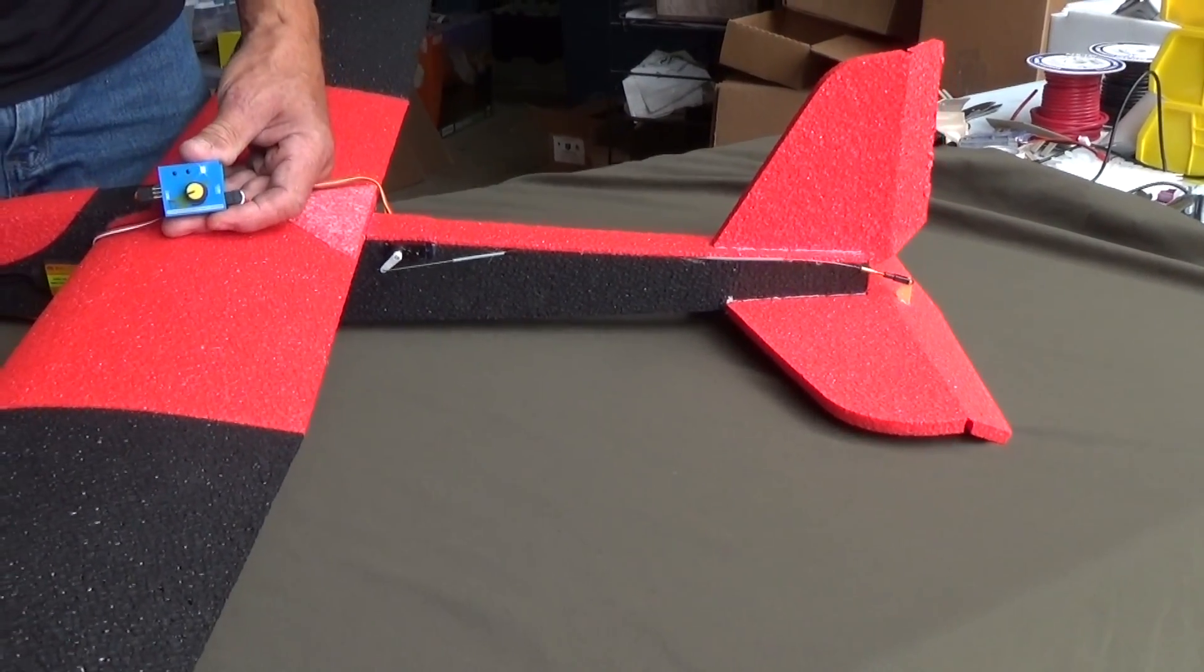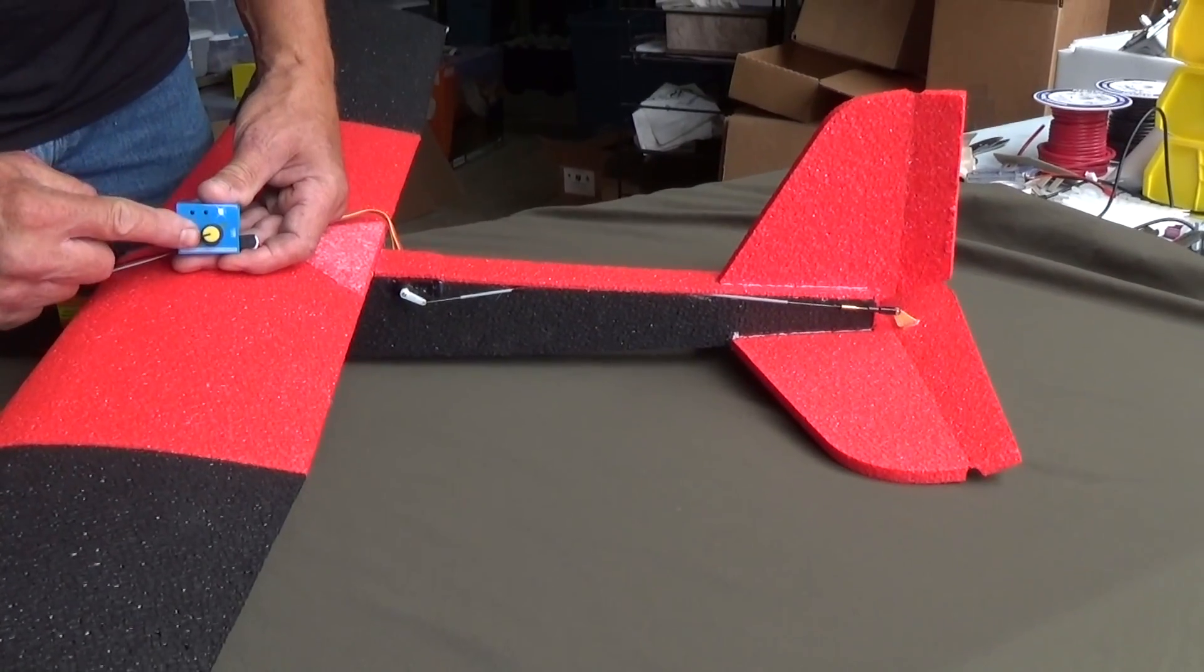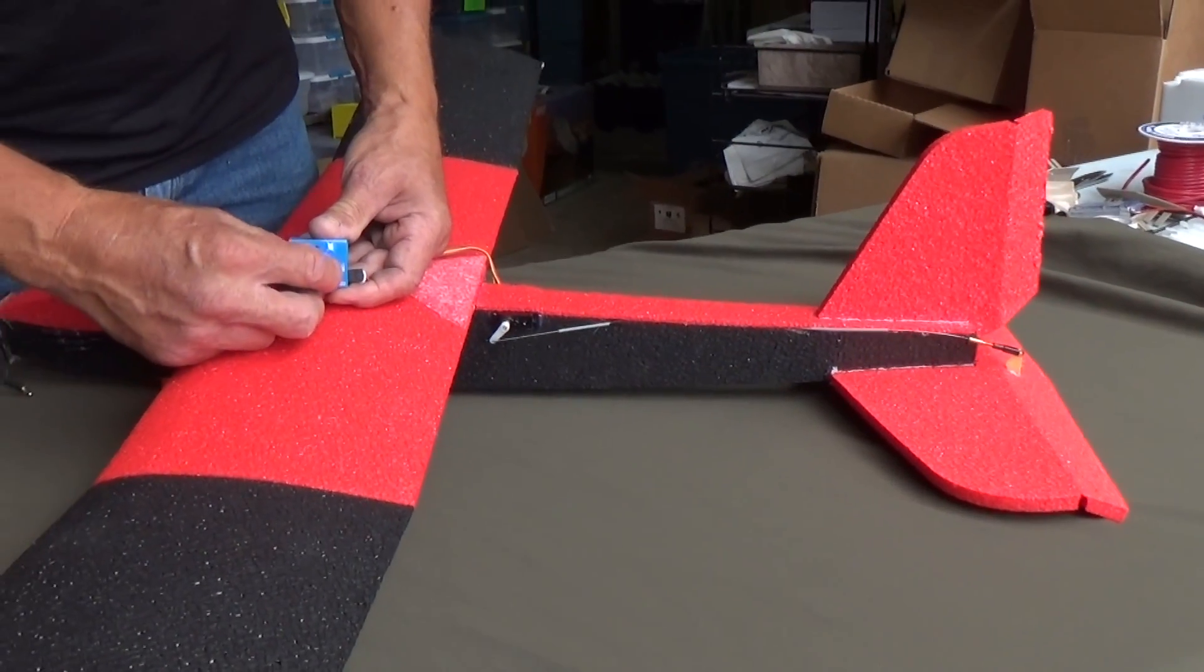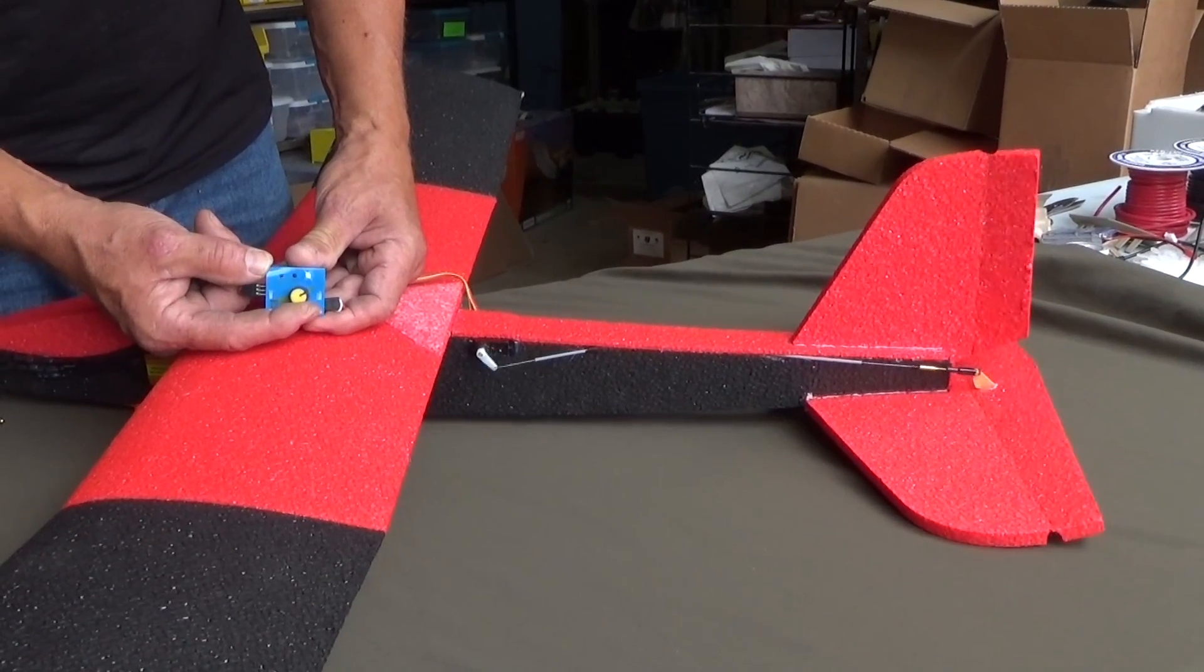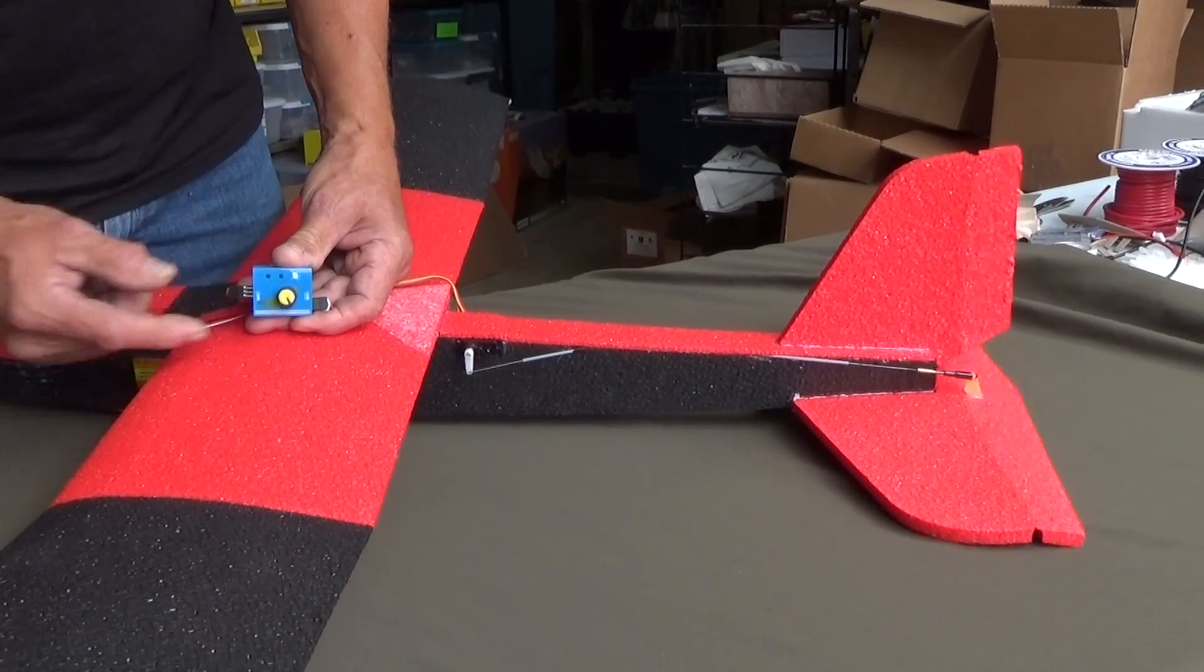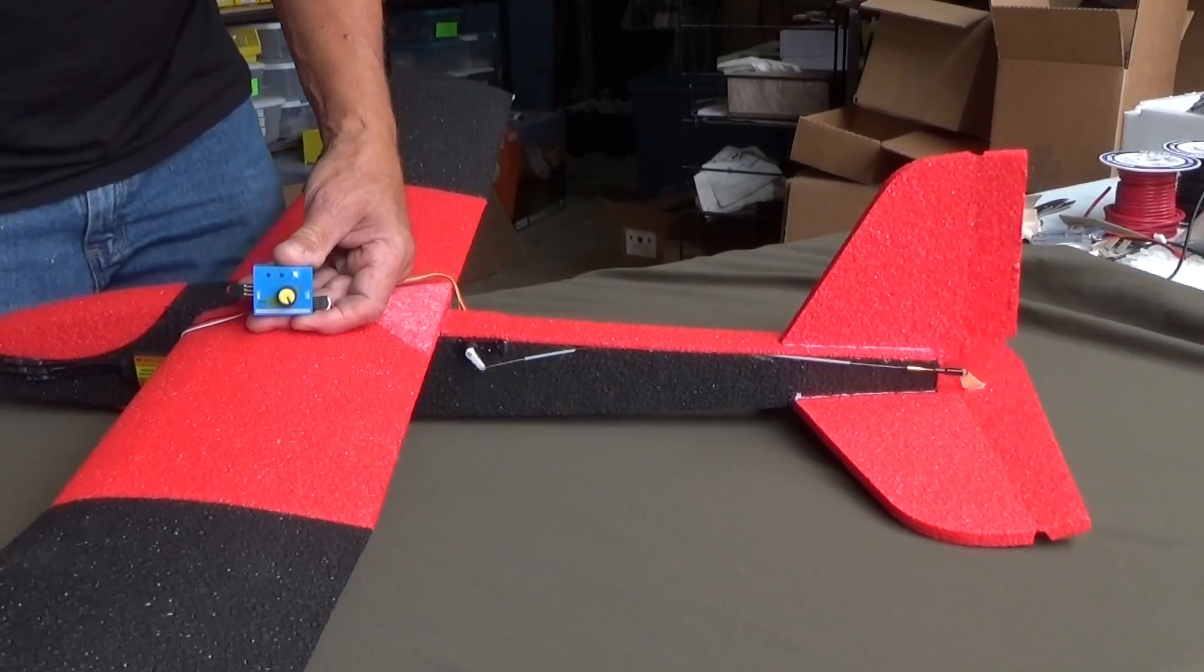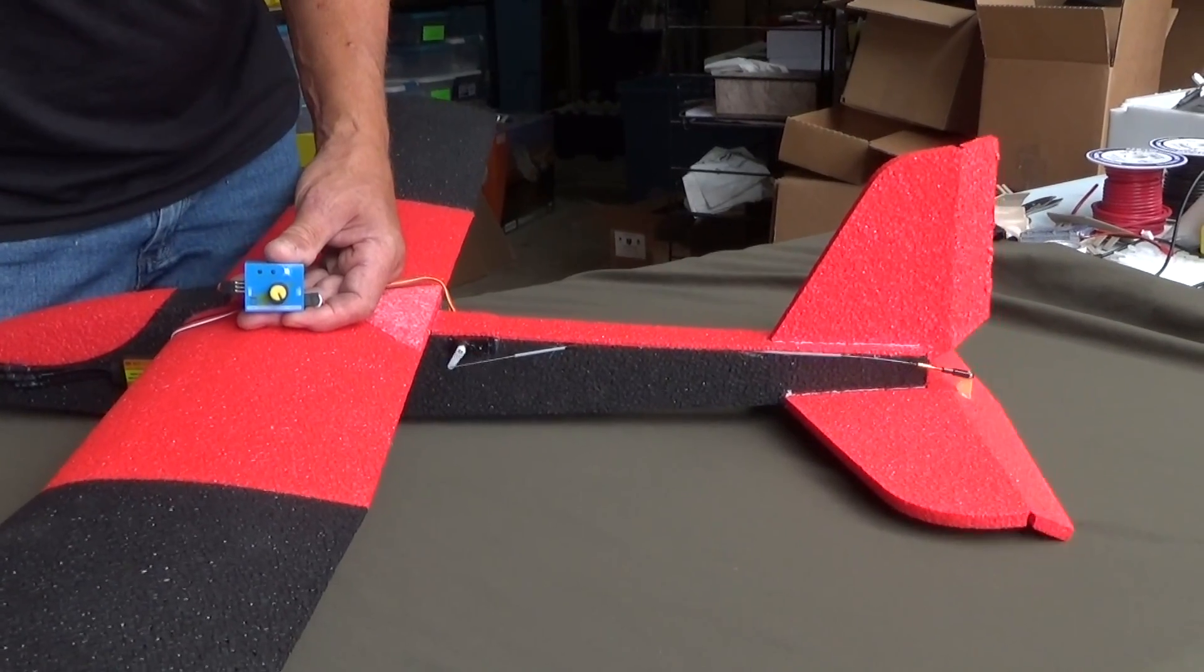Now you can change that speed by turning the dial. So if you turn the dial up on your servo tester, it'll actually go real fast and you can see what's going to happen if you're controlling it fast.